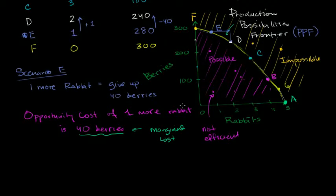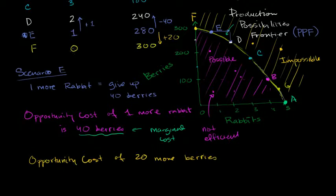But what's the opportunity cost sitting in, let's say we're tired of eating meat. We're sitting in Scenario E and we want to become vegetarians all together. So we want to go to Scenario F. Essentially not eat any rabbits, and eat as much fruit as possible. So another thing that you could ask in Scenario E, is the opportunity cost of, and just to make the numbers easier, I'm going to say opportunity cost of 20 more berries. 20 more berries is, well, I'm going to give up a rabbit.